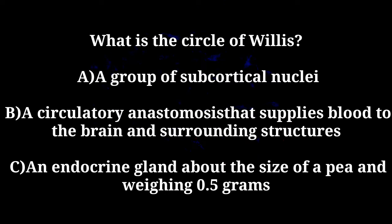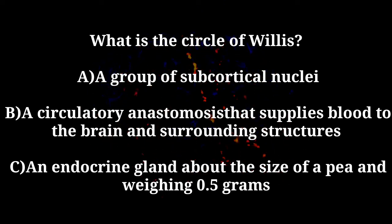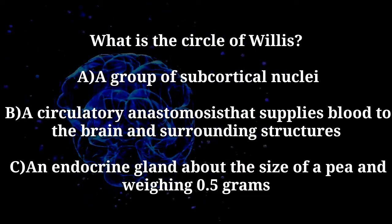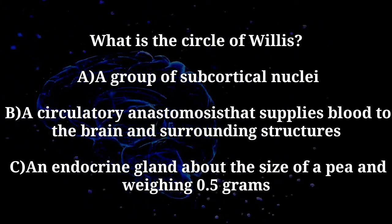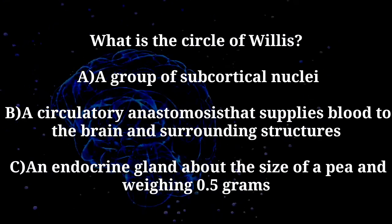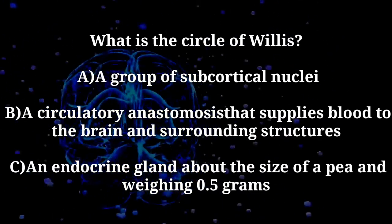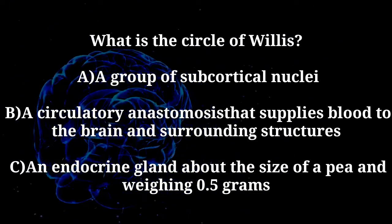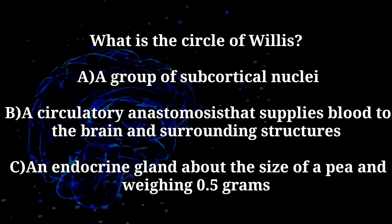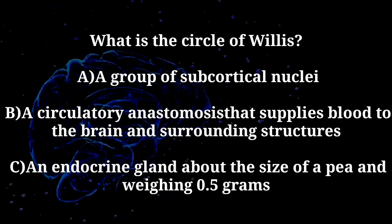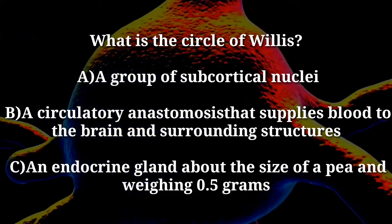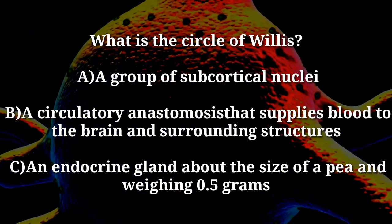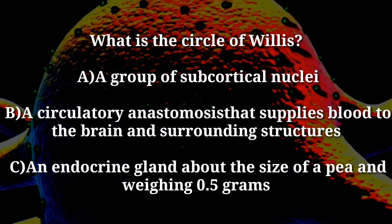What is the circle of Willis? A. A group of subcortical nuclei. B. A circulatory anastomosis that supplies blood to the brain and surrounding structures. C. An endocrine gland about the size of a pea and weighing 0.5 grams.